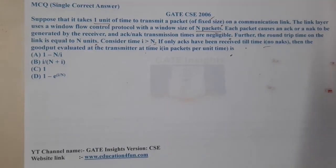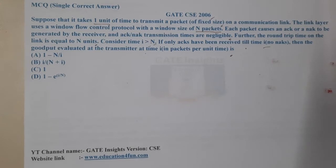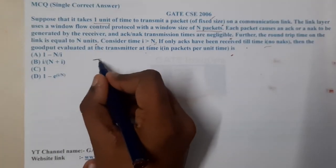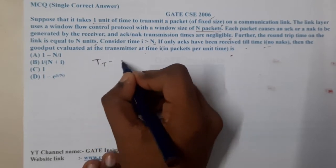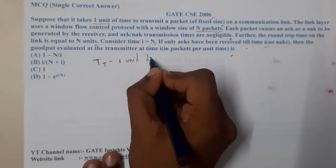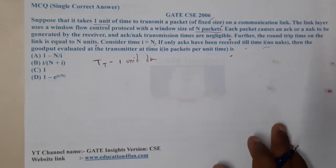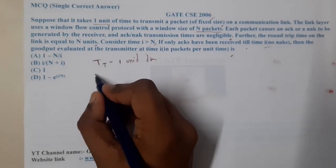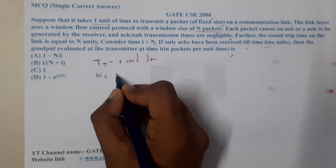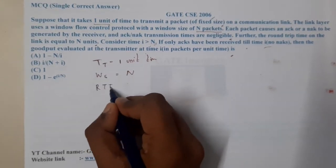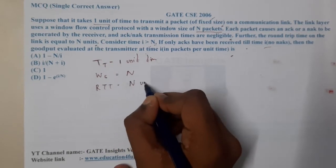Let's summarize what was given: the packet transmission time is one unit of time, the window size is N, and the round trip time is also equal to N units.